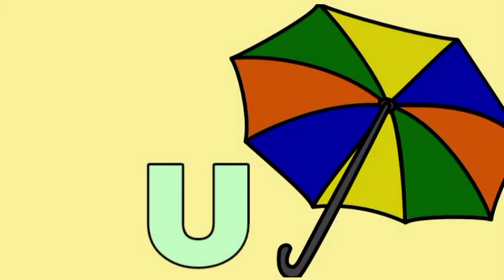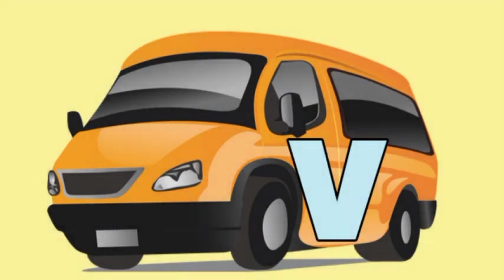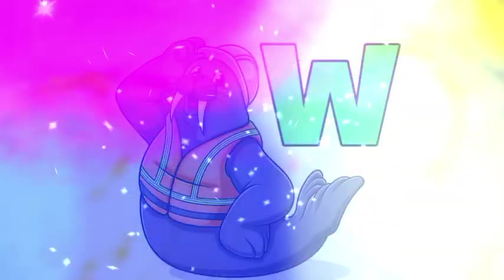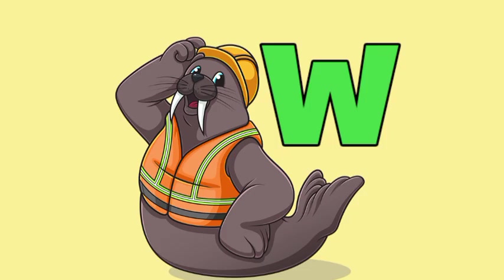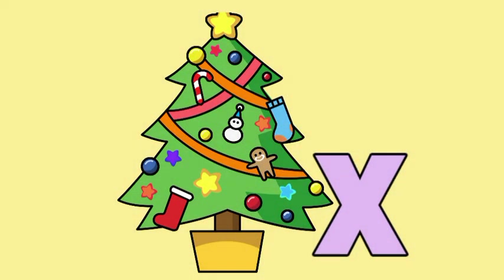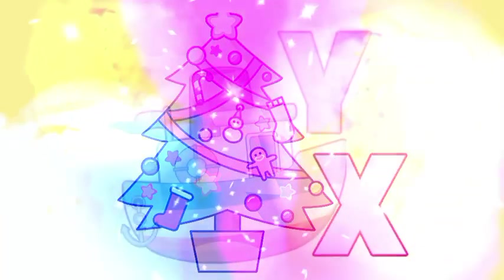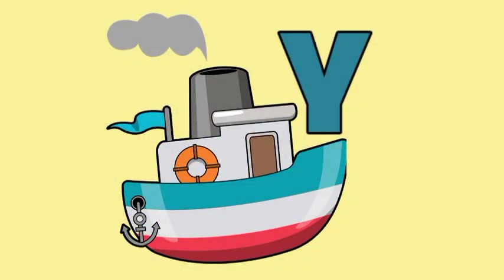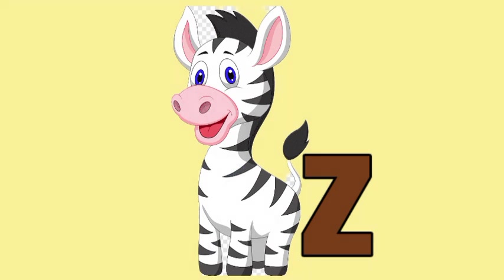U for Umbrella, V for Van, W for Walrus, X for X-Mas Tree, Y for Yard, Z for Zebra.